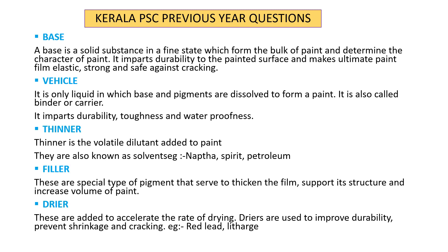The thinner is used to dilute the paint and improve workability. It reduces the thickness of the paint to help it spread. Examples of thinners include spirit, turpentine, and naphtha.